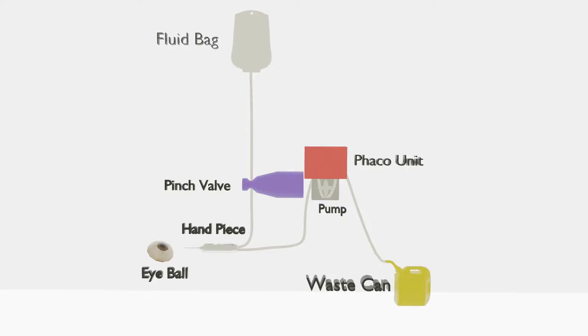Let's look into components of a FACO machine. The major components of the FACO machines are fluid bag, pinch valve, peristaltic pump, handpiece, foot switch, and waste can.